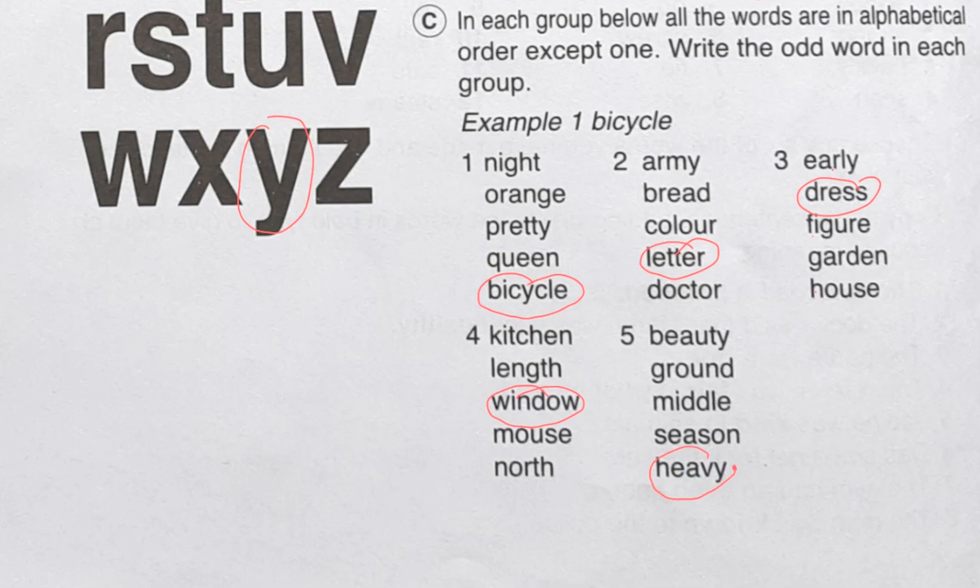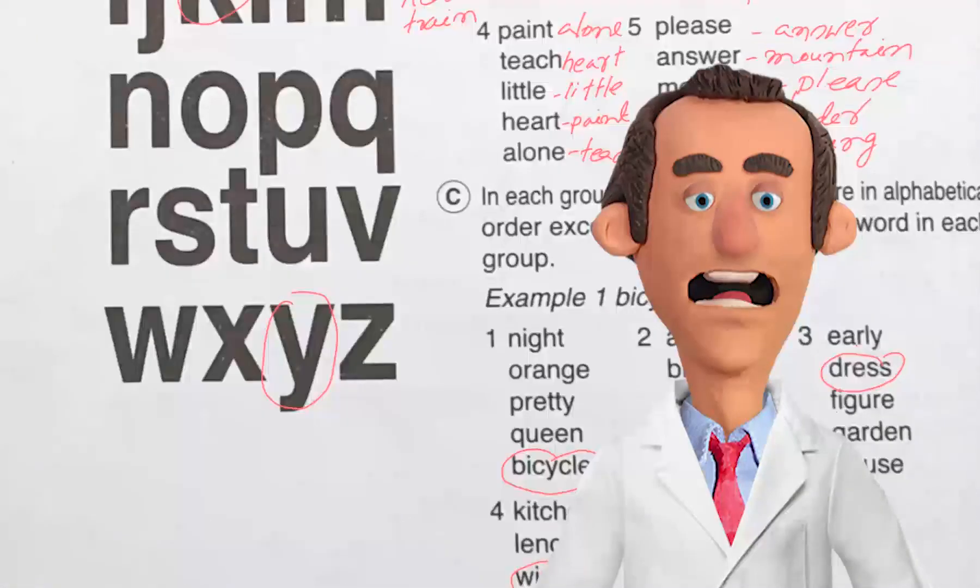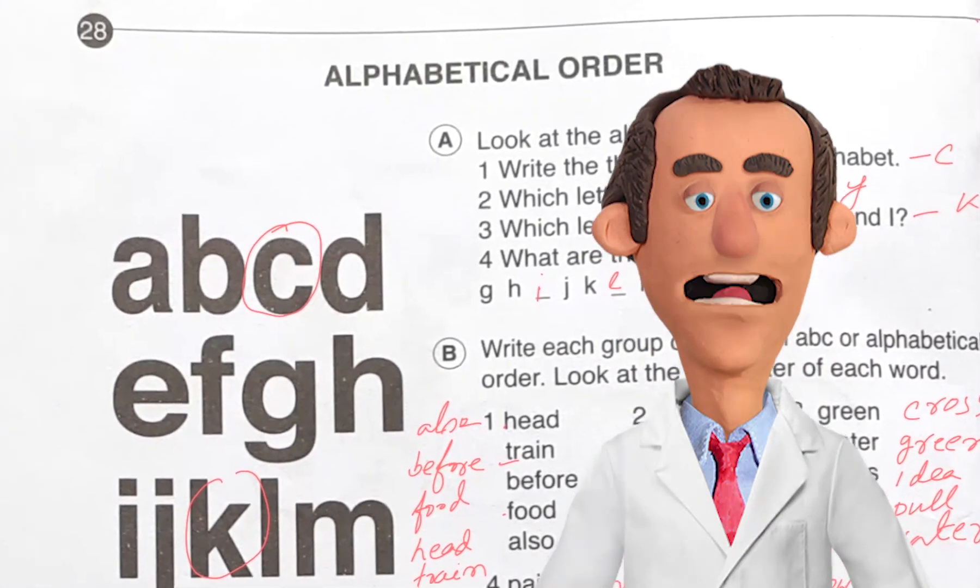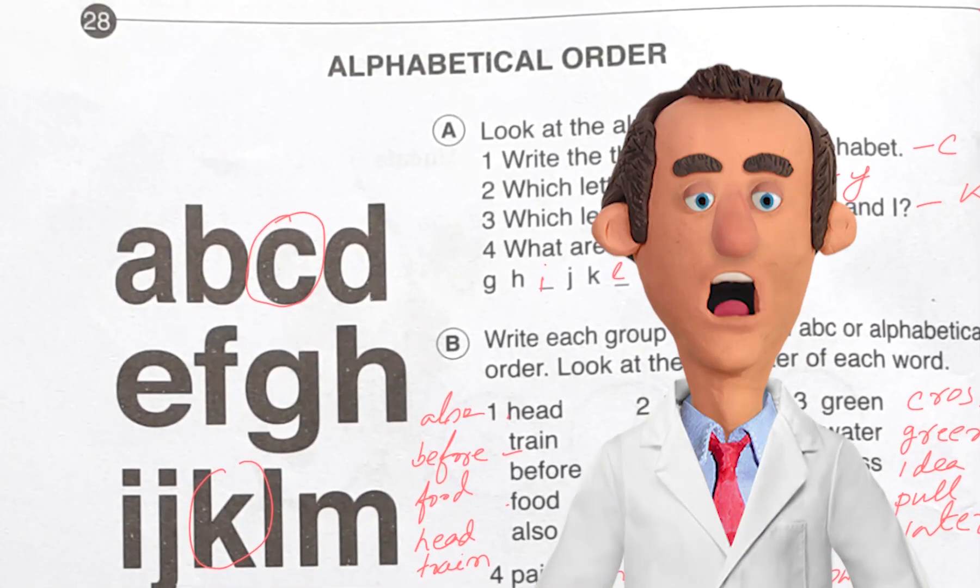So interesting topic this is, and important of course. Today we have done page number 28, and today we have got the topic that is alphabetical order. Next day we will do page number 29, and there we will find the topic that is short forms. That one is also so much important for our writing and reading. You are welcome in that class. Bye for today.